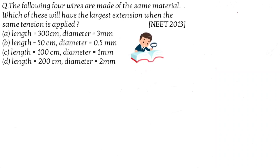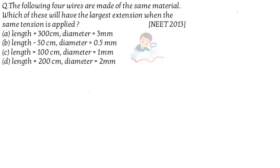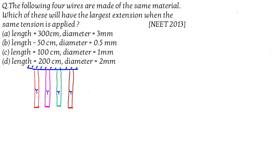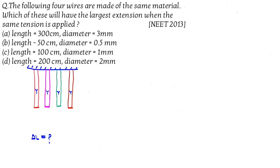Which of the following has the largest extension when the same tension is applied? Suppose you have four rods — one, two, three, four. Since all are made of the same material, Young's modulus value is the same for all. The same tension T is applied, and we need to find the extension delta l.